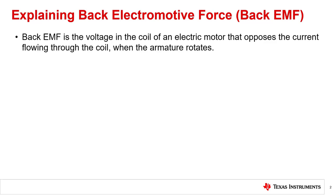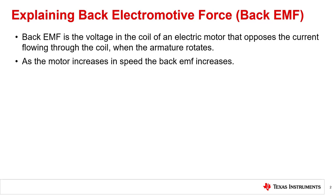When a voltage is applied to the motor, a current will begin to flow through its windings. However, as the motor begins to spin, Lorentz law implies that an opposite voltage will appear that acts in opposition of the current that causes the movement. This apparent voltage that causes a lower current than what the input voltage dictates is known as back EMF. In other words, the current through a motor will be dependent on the voltage applied across the windings and the back EMF generated by the motor's rotation.